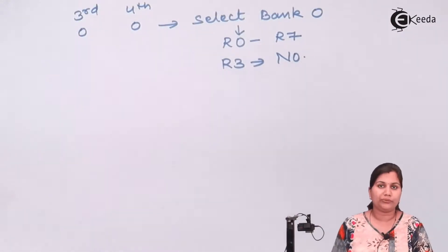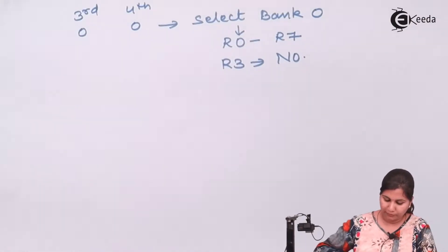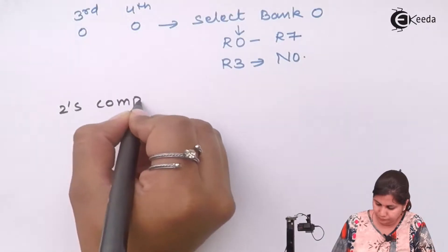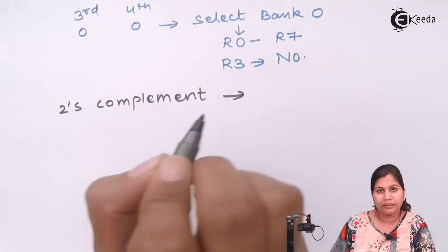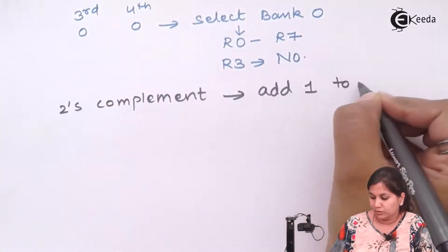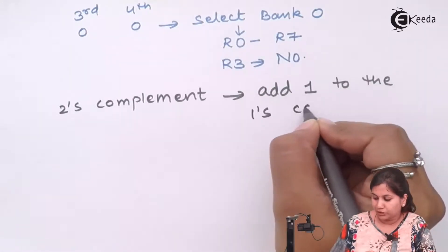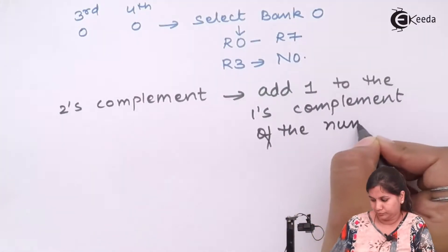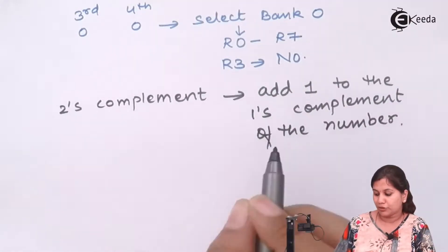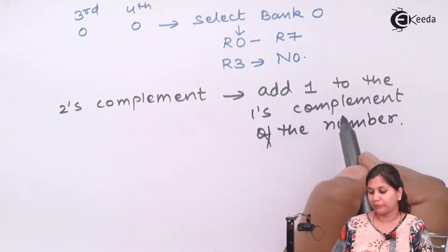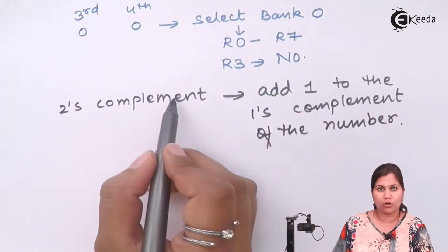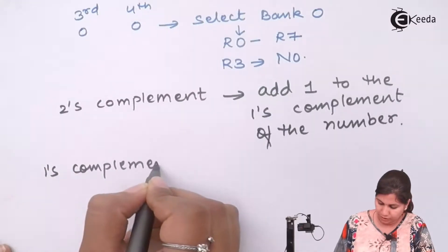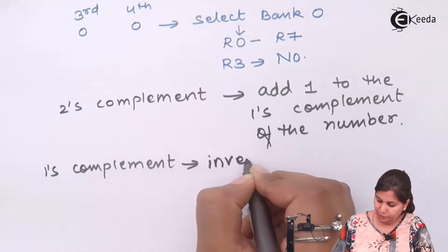Now the next step is how we are going to find the two's complement. Two's complement means we have to add 1 to the one's complement of the number. So to find the two's complement, first we find the one's complement, and then we add 1 to get the two's complement. One's complement means we have to invert each bit of the number.